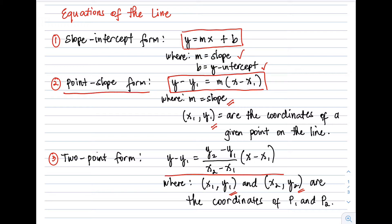The two-point form is almost the same as the point-slope form. The difference is that in the two-point form the slope is not given, so instead of m, we use the slope formula. Now let's have Example 1.